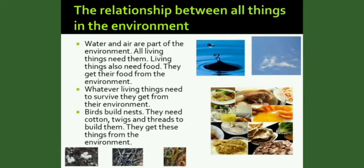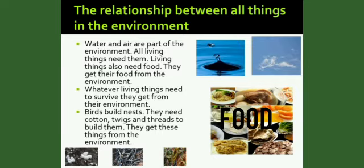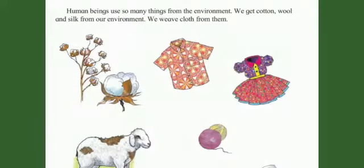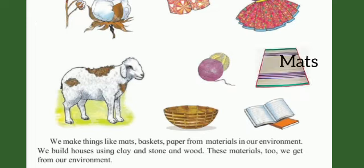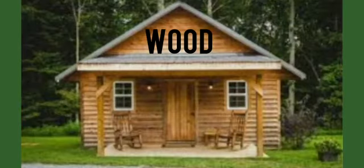Let's see the relationship between all things in the environment. Water and air are a part of the environment — all living things need them. Living things also need food, and they get their food from the environment. Whatever living things need to survive, they get from their environment. Birds build nests and need cotton, twigs and threads to build them — they get these things from the environment. Human beings use so many things from the environment. We get cotton, wool and silk from our environment and weave cloth from them. We make things like mats, baskets and paper from materials in our environment. We build houses using clay, stone and wood — these materials too we get from our environment.